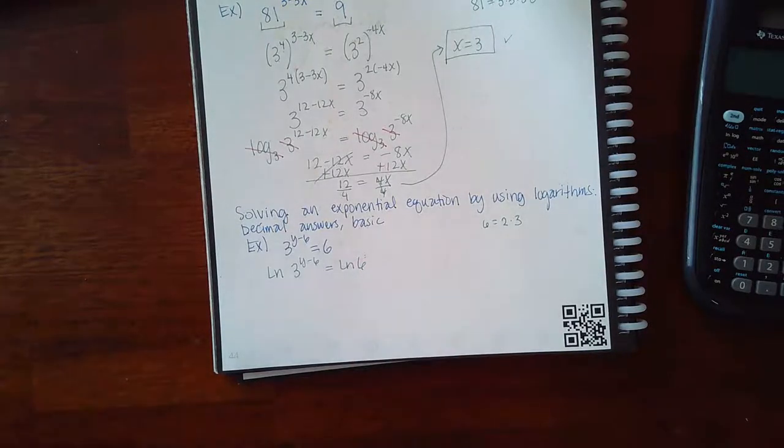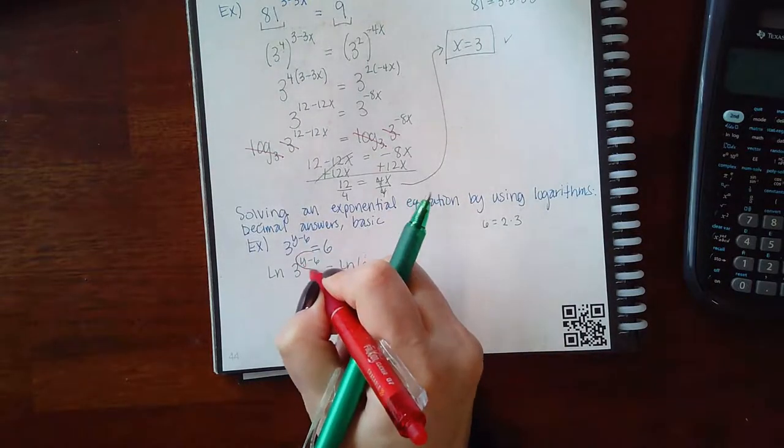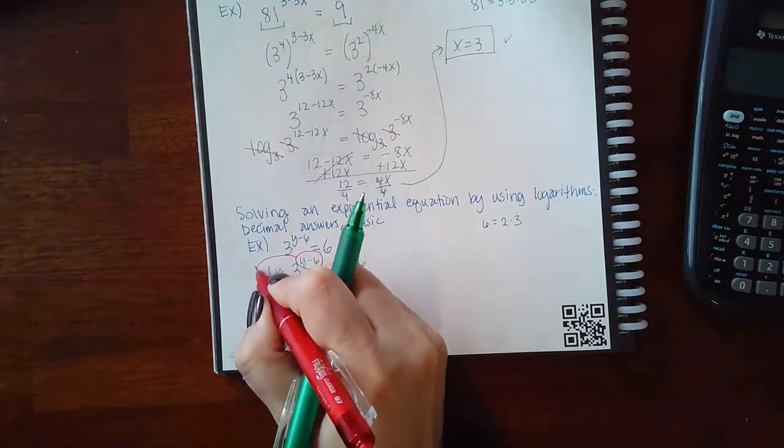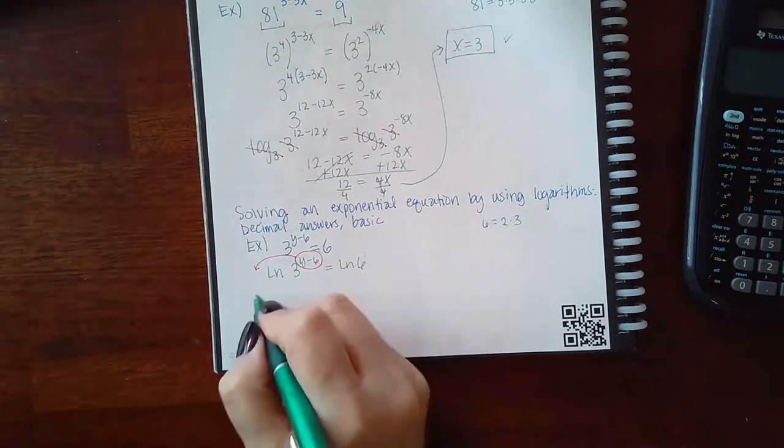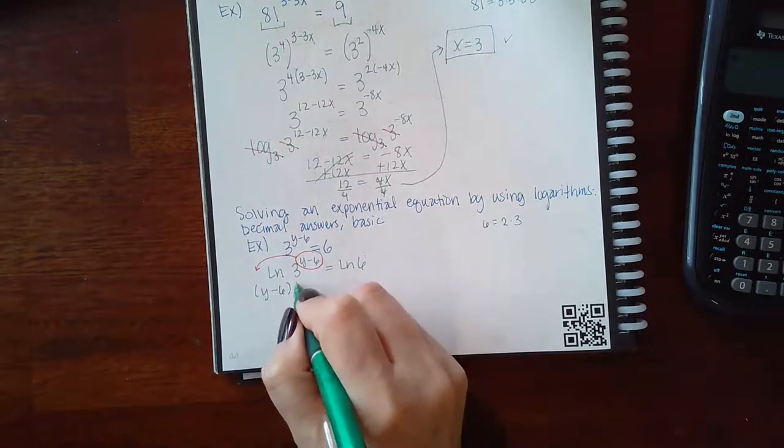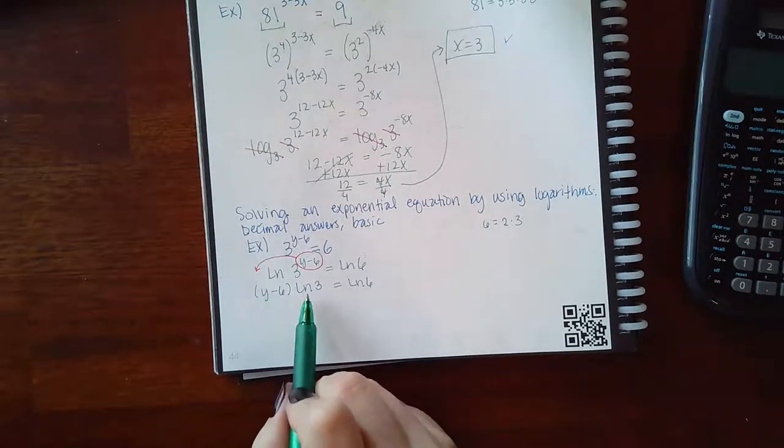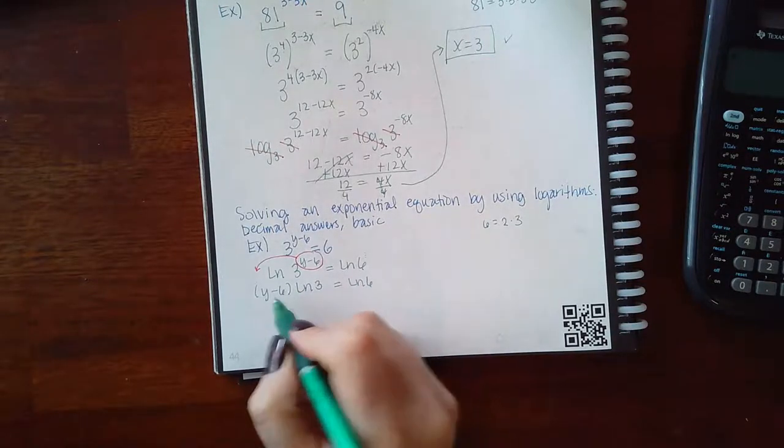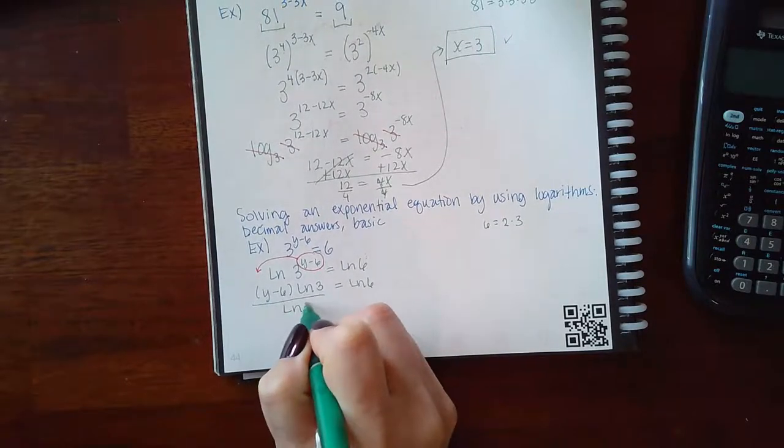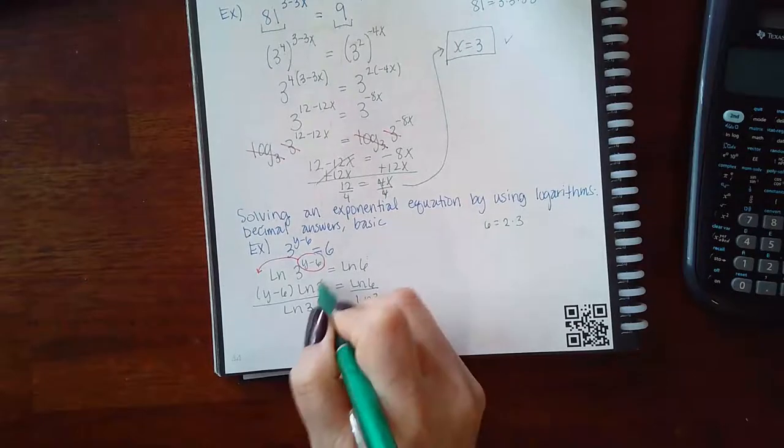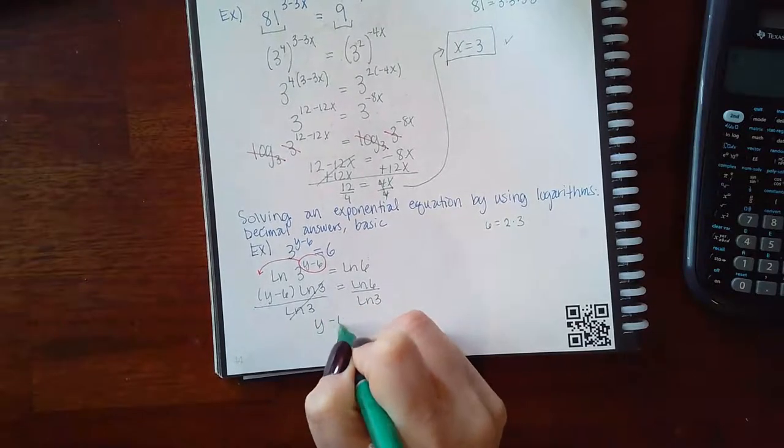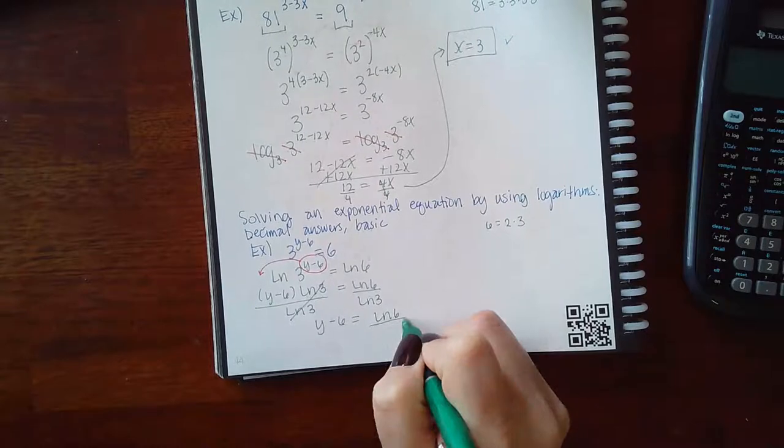You cannot cancel the numbers. So we just have to keep following the process of logs trying to solve for Y. And one of the properties of logs tells me that if I have an exponent on a logarithmic expression, I can bring it down to the front. So this becomes Y minus 6 times the LN of 3 equal to the LN of 6. And if I want to get rid of that LN of 3, since it's multiplied by the expression with Y in it, I can divide by 3.